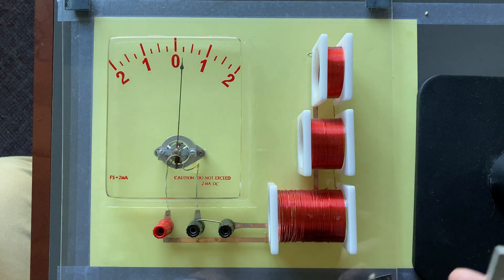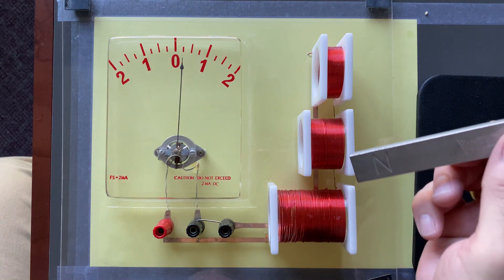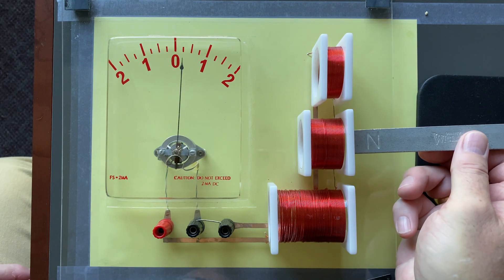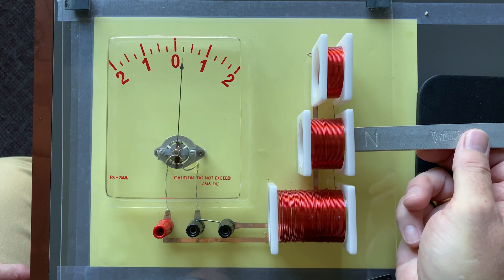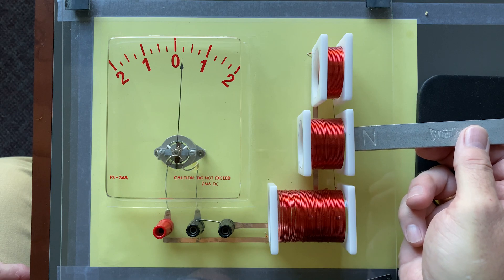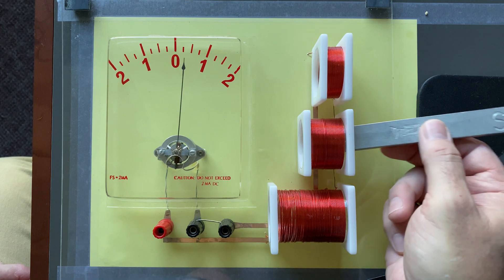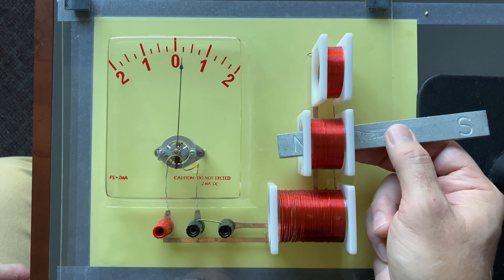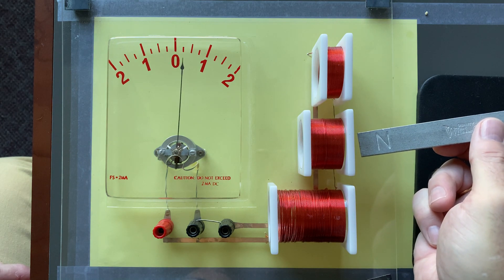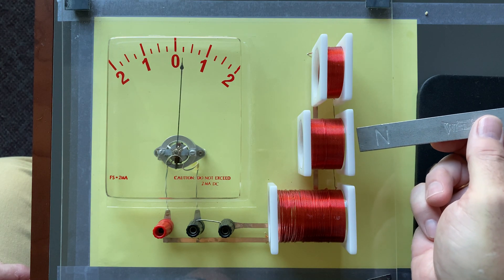Okay, well, what about if I have more loops of wire? Does that change anything? Well, here we go. There's the north pole going into this loop of wire. Oh, it deflected more. So, it was easier to get a deflection out of that.